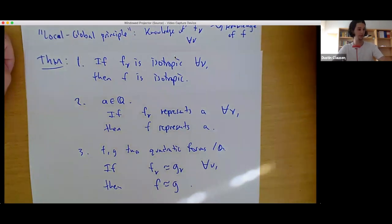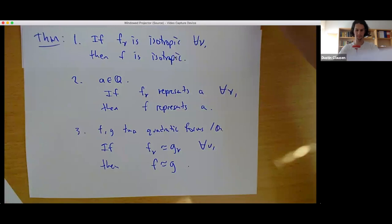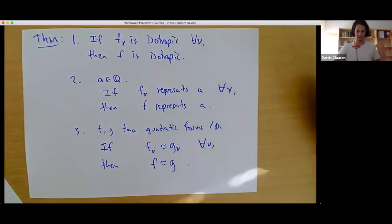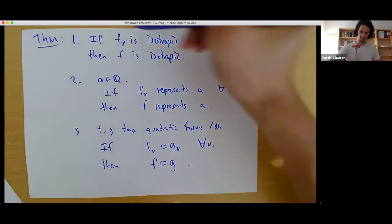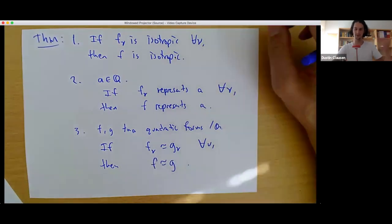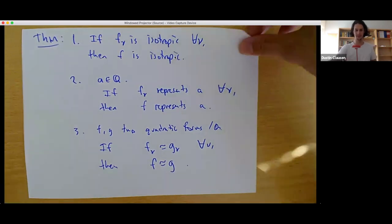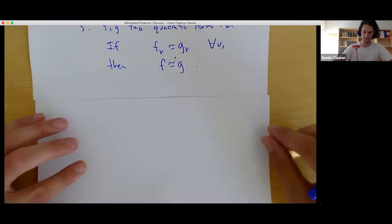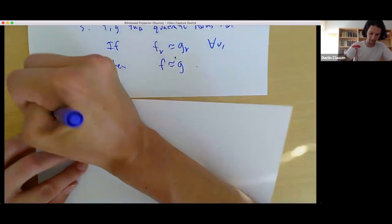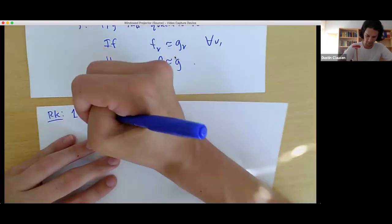Those are the three forms of the Hasse-Minkowski theorem. The first thing I'd like to explain — and it comes from something that Akhil already taught us — is that form one implies both form two and form three. Akhil taught us the general principle that the question of whether a quadratic form is isotropic or not is the most basic question you can ask about a quadratic form.